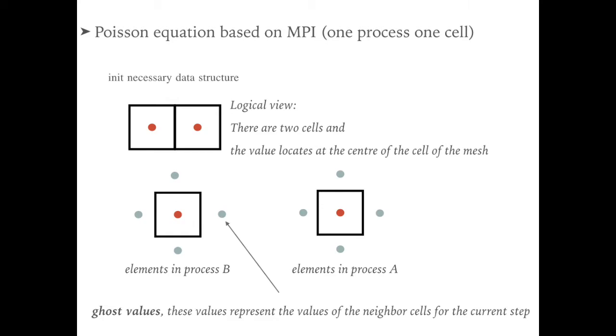The memory spaces are also isolated between these two processes. In order to update the cell value, we need to store the neighbor values in current process, and we call these values the ghost value. Actually, the ghost values are redundant variables to store the value in neighbor cells.